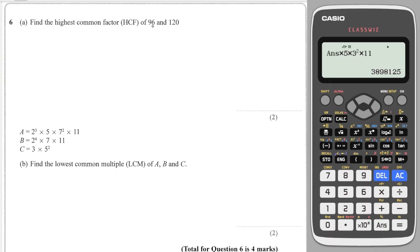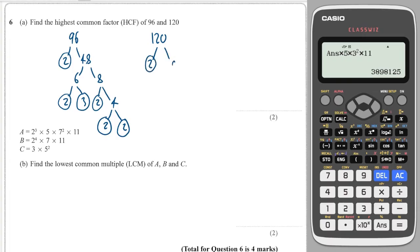Next question, find the highest common factor of 96 and 120. I'm going to use the same method. 96 is 2 multiplied by 48, which is 6 times 8, which is 2 and 3, 2 and 4, 2 and 2. And 120 is 2 times 60, 6 times 10, 2 and 3, 2 and 5.